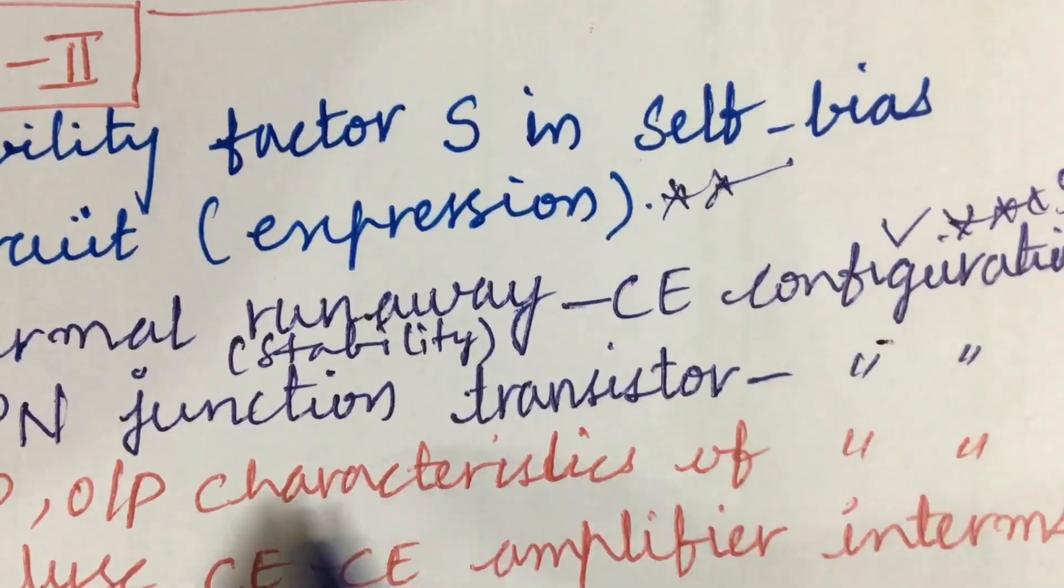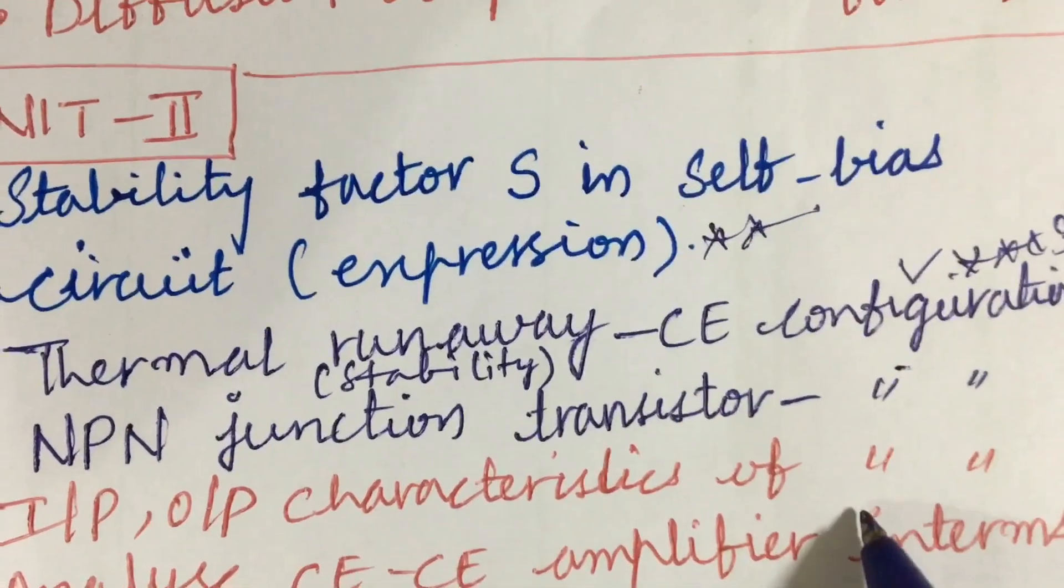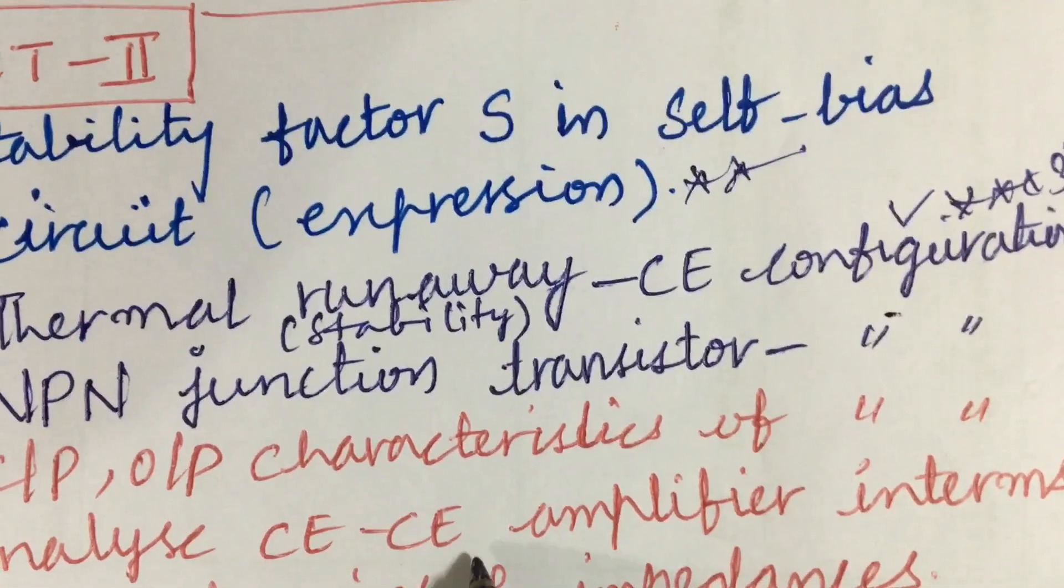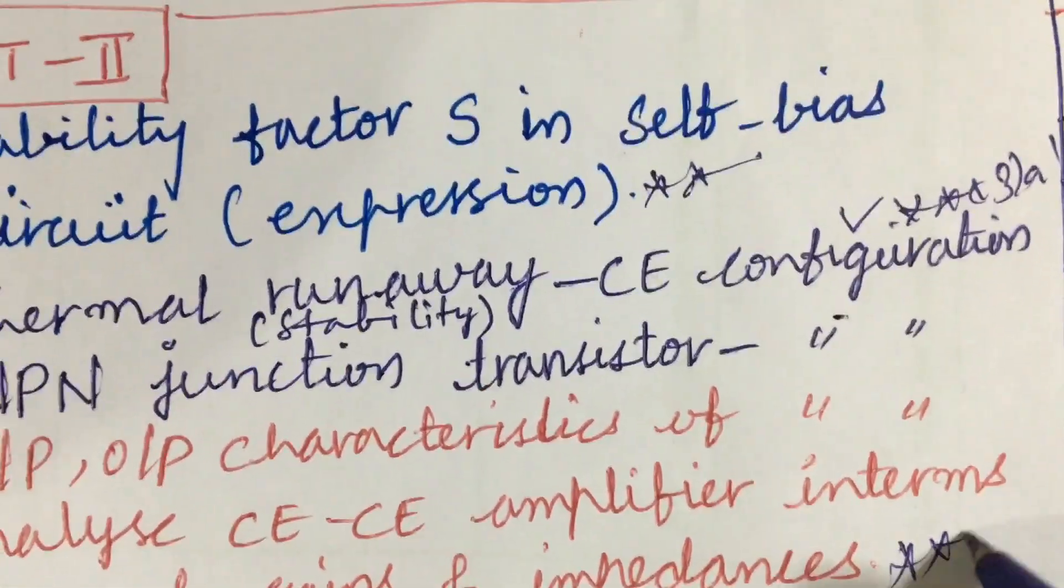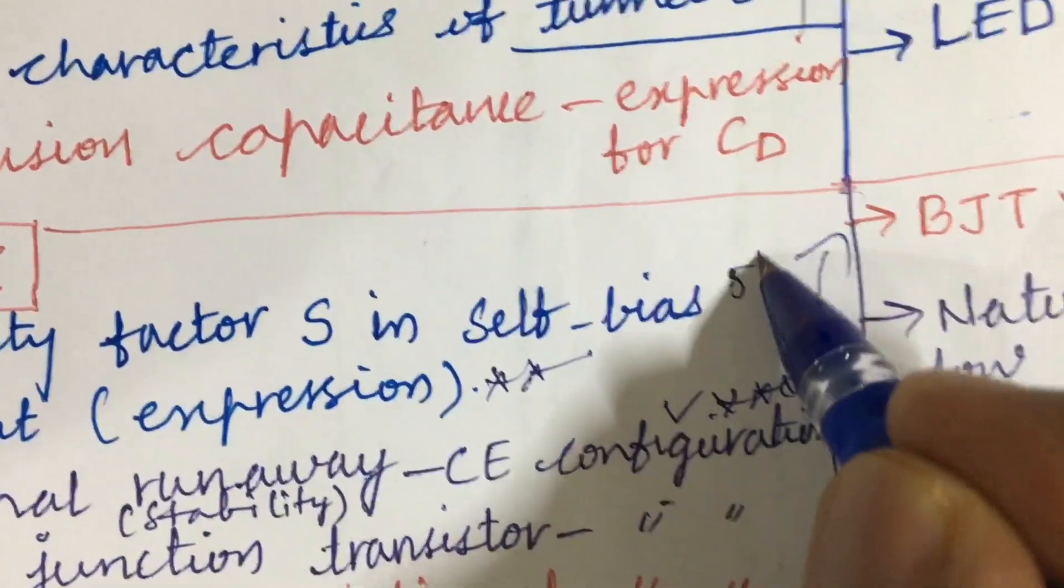As well as NPN junction transistor using CE configuration and input as well as output characteristics of a collector configuration. Analyze CE amplifier in terms of gains and impedance may be also one of the important questions. From this part we can expect 3A as well as 3B, dear students.